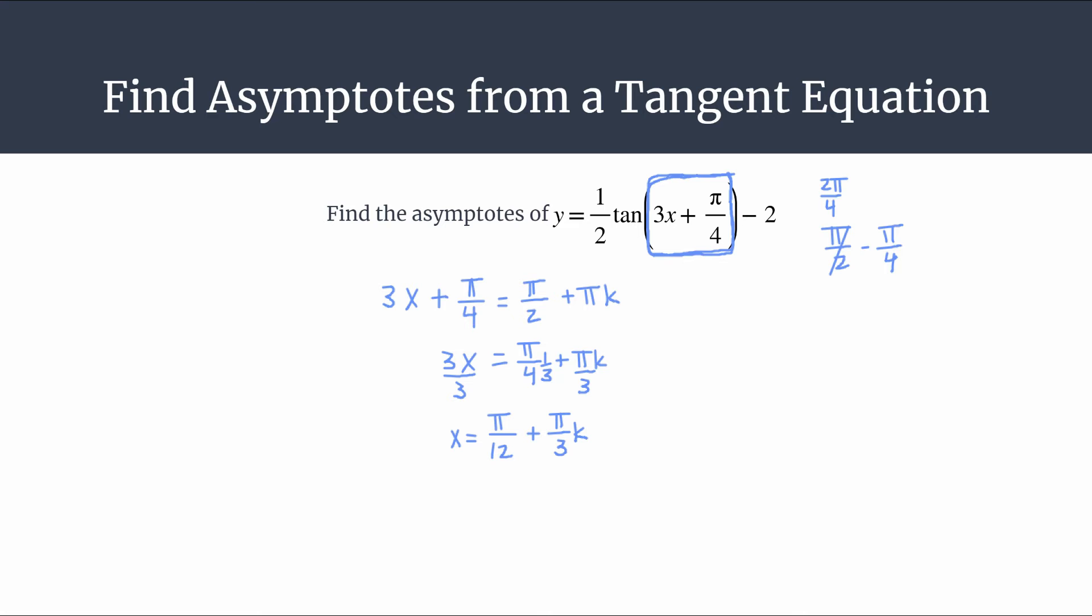This equation, x equals pi over 12 plus pi over 3k, will generate every single asymptote. We know there are infinitely many vertical asymptotes for a tangent graph since they are trigonometric graphs. They repeat. They're cyclical. All you have to do is substitute in different values of k, and you'll get different asymptotes for the graph.